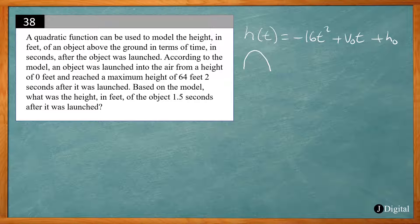And then this problem will give us two points. So initial height was 0 feet, so we got (0,0). At 0 seconds, it was 0 feet high. And at 2 seconds, it was 64 feet high. Now this is the maximum height, so this is our vertex.